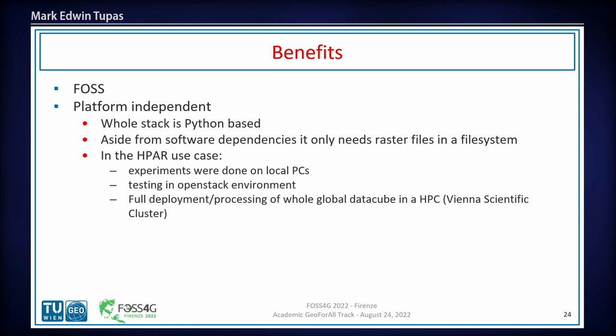The benefit of this software stack is that it's FOSS and platform independent. You only need files in the file system — no database, no GeoJSON overhead to index your files. You just need the software dependencies and the files in your file system, and you're good to go for data cube analysis. In the harmonic parameter case, we did experiments on local PCs, then tested on a larger area in the cloud, and ultimately ran it in a high-performance computing environment — the same software and system scaling from local PC up to HPC.